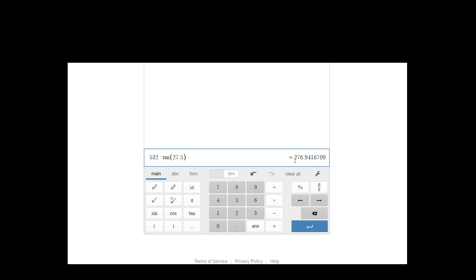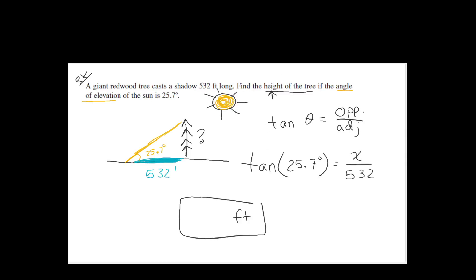The answer is approximately 277 feet — that's a pretty tall tree. I round to the nearest foot because the angle only went to one decimal place and the shadow length was a whole number. Usually you try to match the problem's rounding when they don't specify.